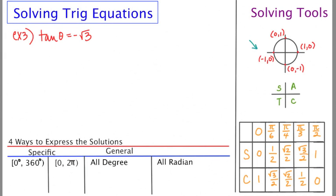In example 3, the equation is tan theta equals negative root 3. So negative root 3 is not a quadrantal angle, it's going to be one of the benchmark angles.